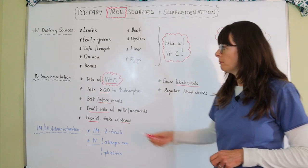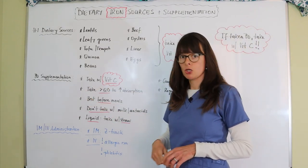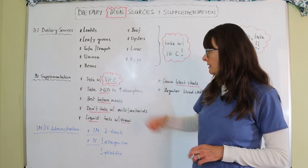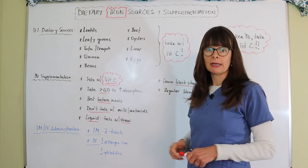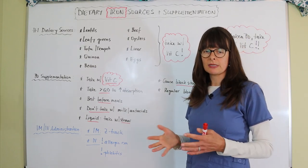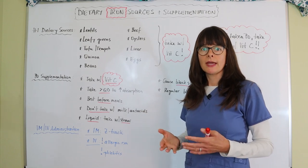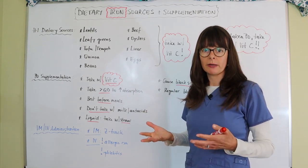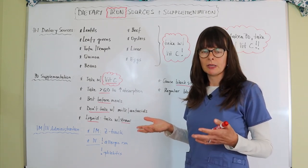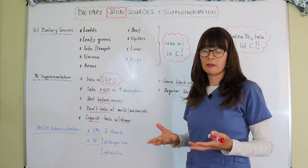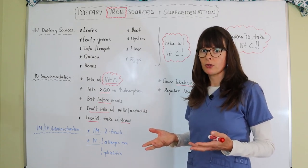Now when we look into oral supplementation, again we want to take it with vitamin C, and that can be a glass of orange juice, or if for some reason it's not possible, other sources of vitamin C by food can be helpful, or another vitamin C supplement to take with your iron supplement.